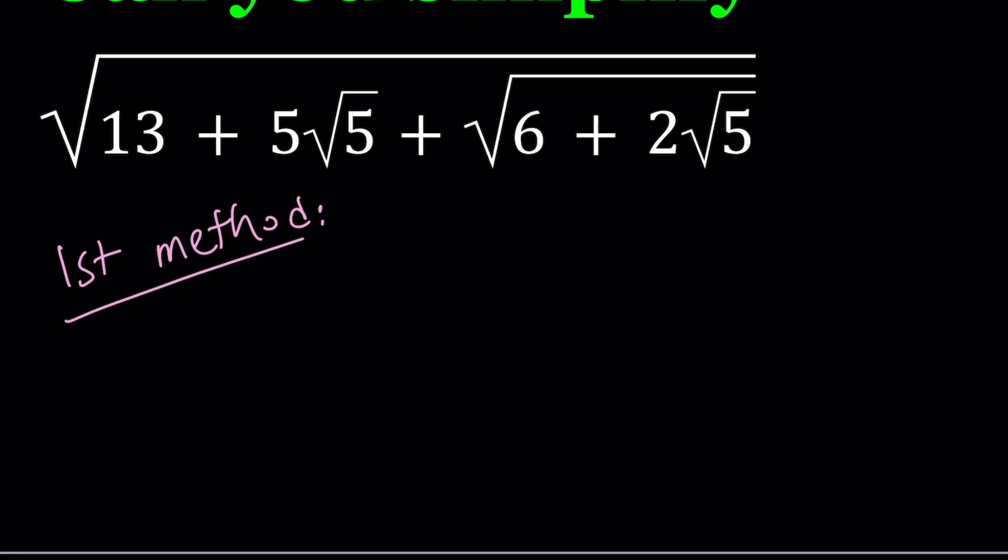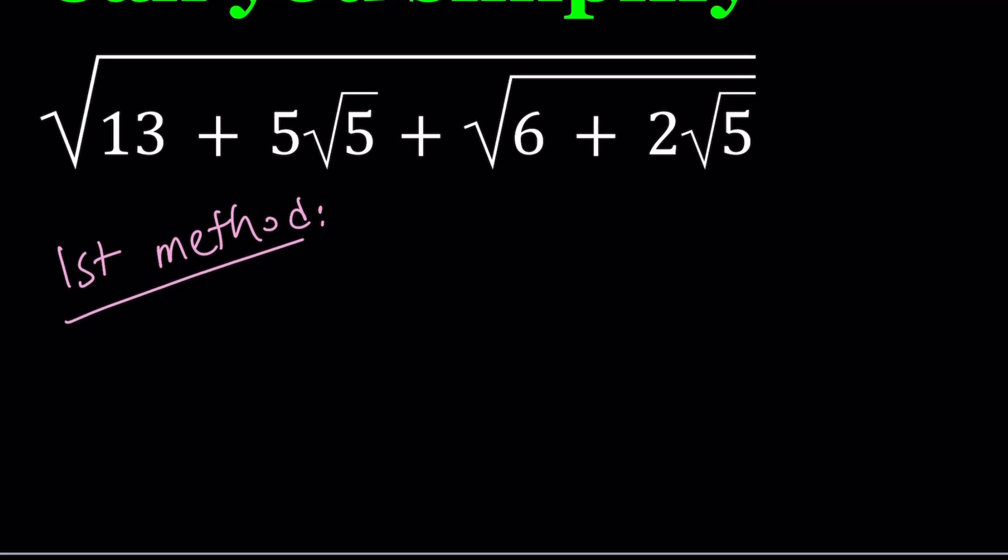Alright, so for my first method, I'm going to start working with the innermost radical here, which is the square root of 6 plus 2 root 5. How do you simplify this? Well, here's what we can do. I'm going to write this as, first of all, notice that 6 is 5 plus 1.